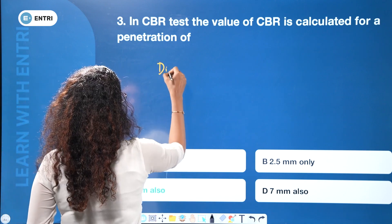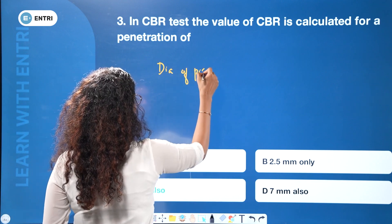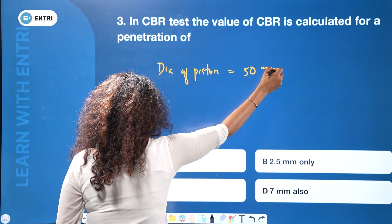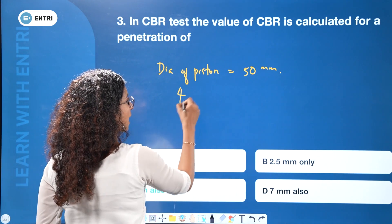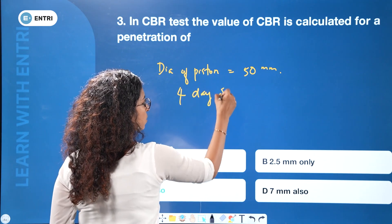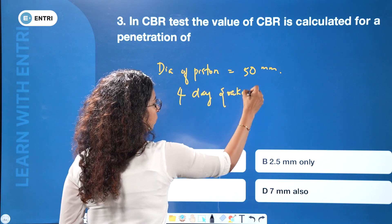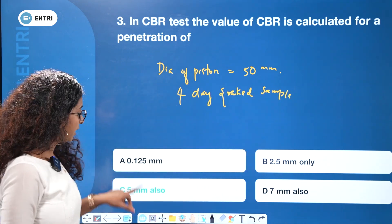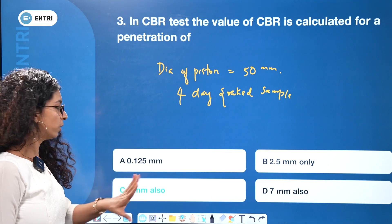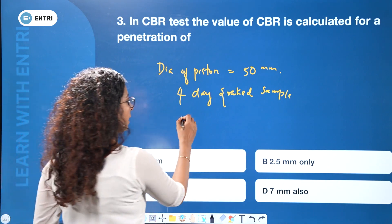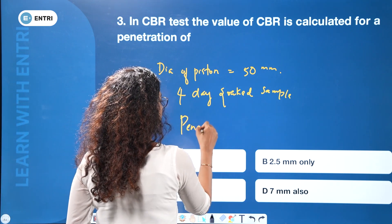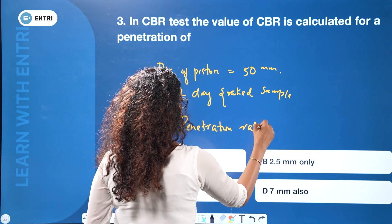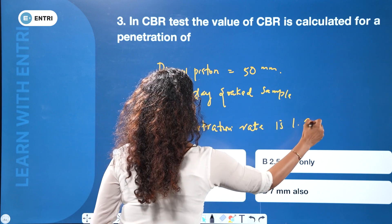The diameter of the piston used in the CBR test is 50 mm. The sample is soaked for 4 days. The penetration rate applied during the test is 1.25 mm per minute.